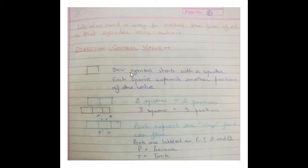Each square represents another position of the valve. Now if you have two squares, means the valve has two positions. If you have three squares, the valve has three positions. Ports represent the way the fluid can flow.